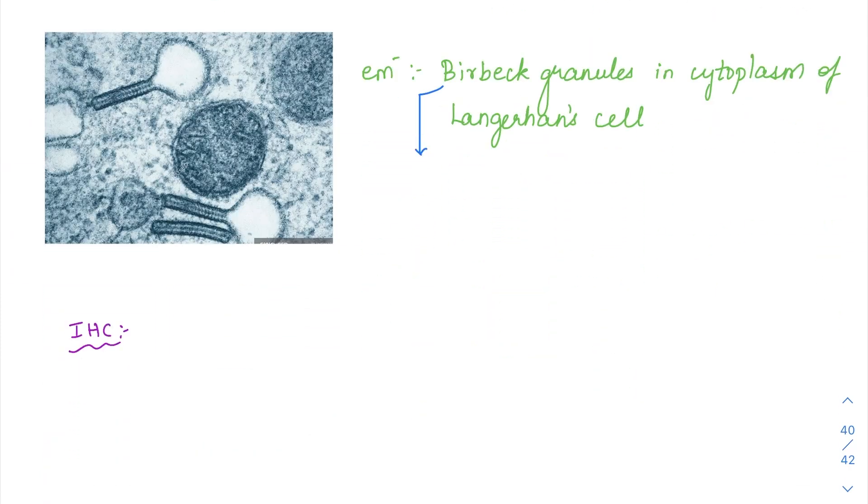Then moving on to the electron microscopic image, this image can be asked again. Here we are going to have this tennis racket kind of an appearance. What are these structures? They are just looking like as if they are a tennis racket and in this handle, you are having this kind of an appearance. This is called, this is nothing but the Birbeck's granule present in the cytoplasm of these Langerhans cells. Langerhans cells are going to contain this Birbeck granules and this Birbeck granules are the one which are having this tennis racket appearance on electron microscopy.